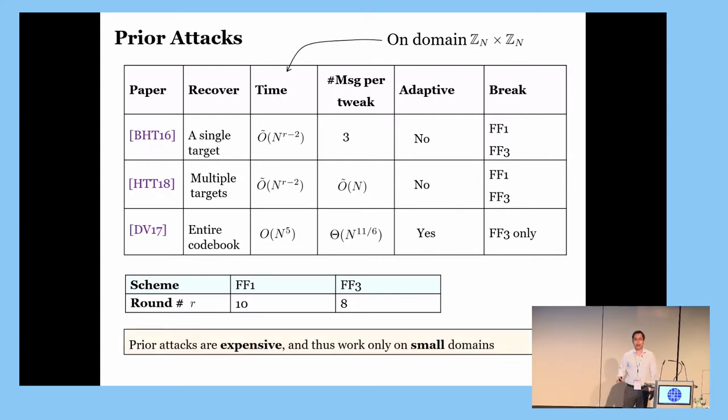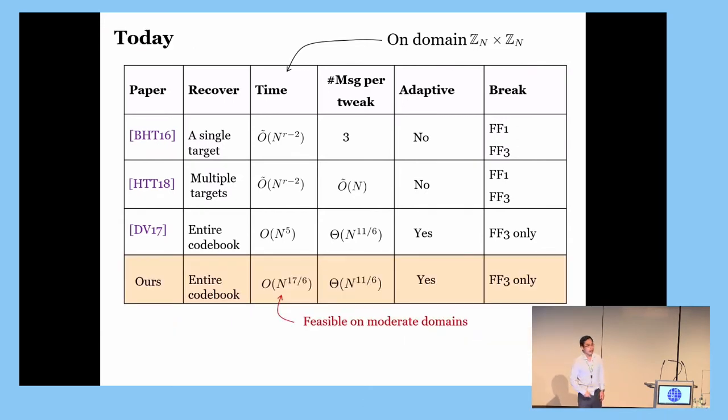So, all attacks so far are expensive, requiring at least N to the fifth operations where you attack domain Zn times Zn. So, they are only suitable on small domains. But today, I will show you how to improve the DV attack to reduce the running time from N to the fifth to almost N cubed. So, this is the very first attack on FF3 that is feasible on moderate and large domains.